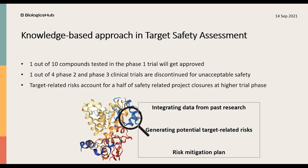To conclude findings from the industry: one out of ten compounds tested in phase one will get approved; one out of four phase two and phase three clinical trials are discontinued for unacceptable safety; and these safety issues are more often target-related as a program advances. Given these conclusions, target safety assessment calls for a knowledge-based approach to decrease drug failure — using data from past research to conduct a thorough assessment of a target early in a program, helping scientists identify risks and build risk mitigation plans, thereby increasing chances of successful product development.